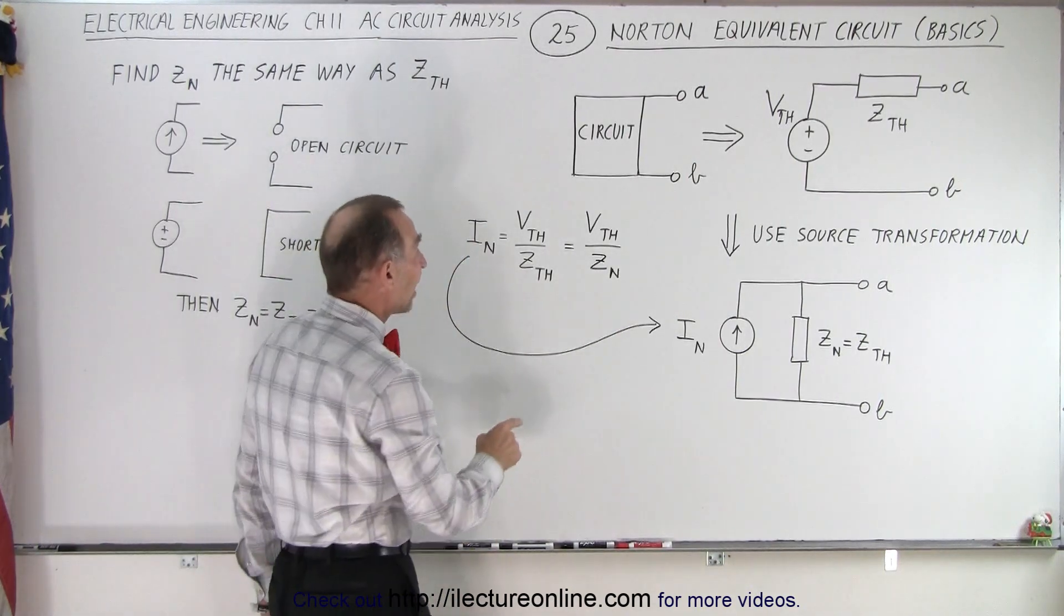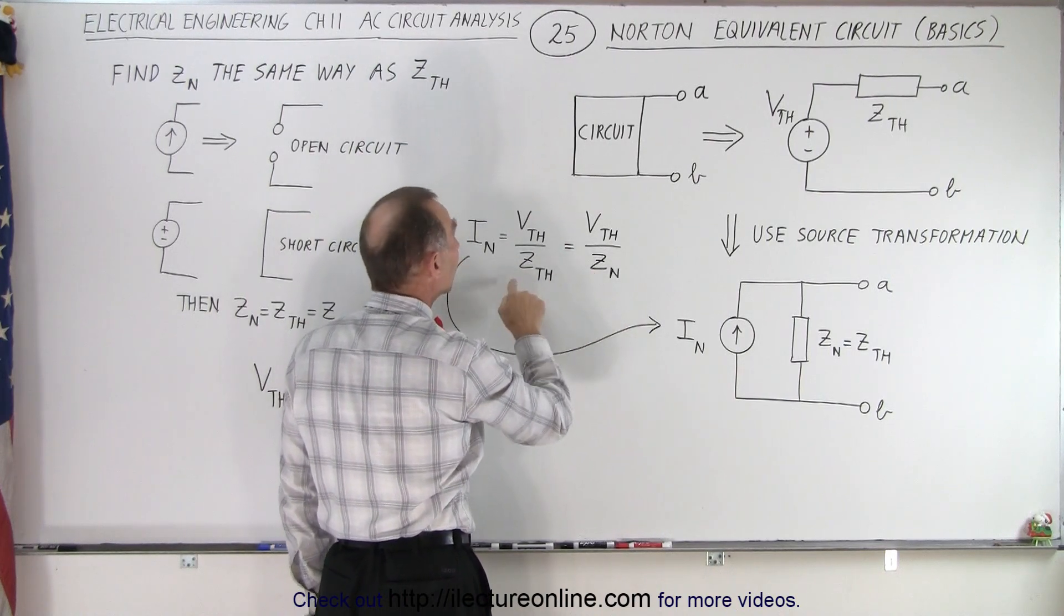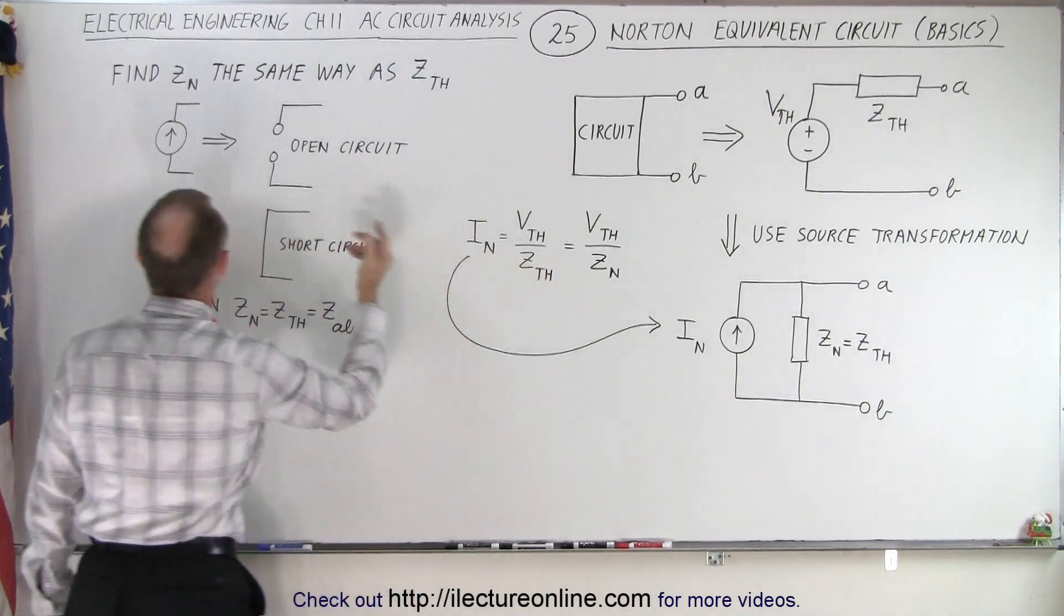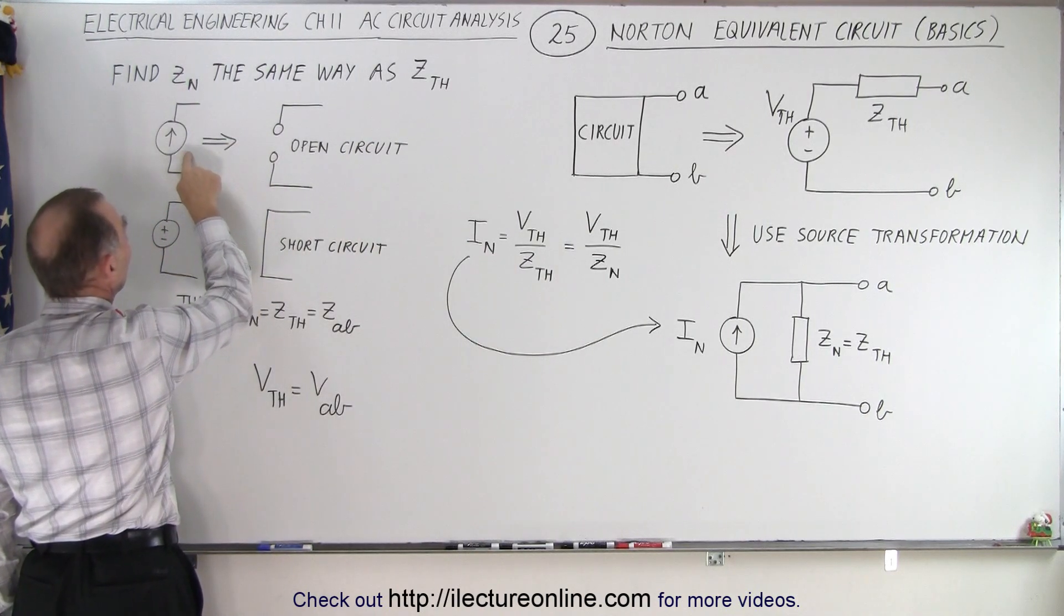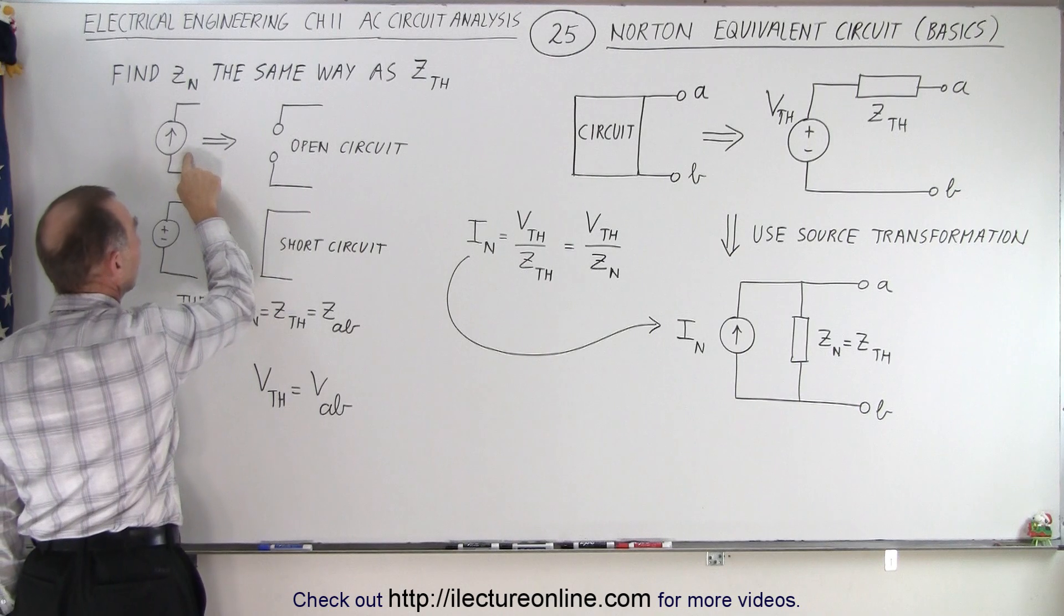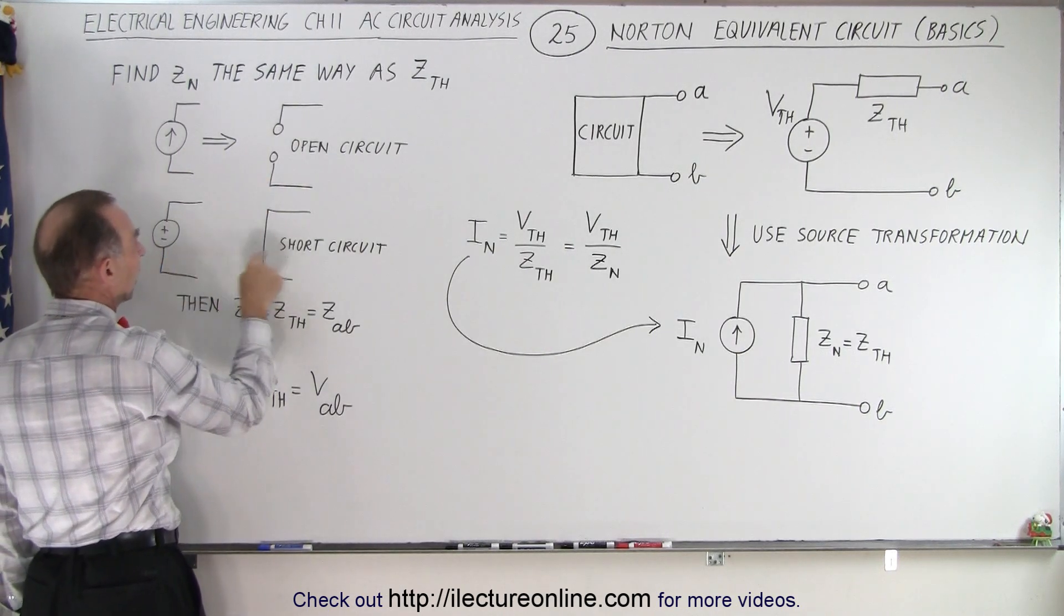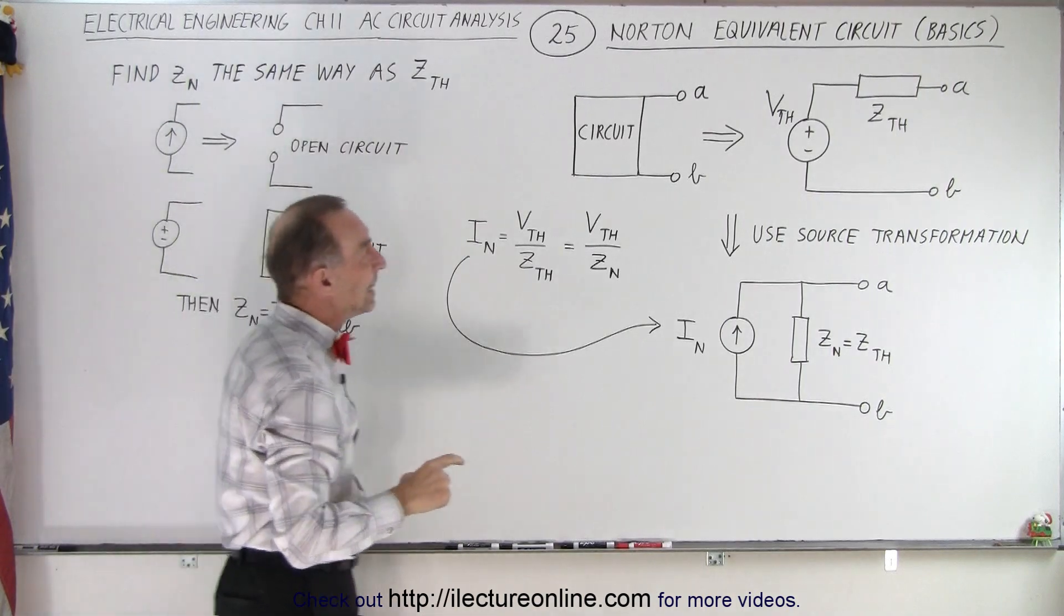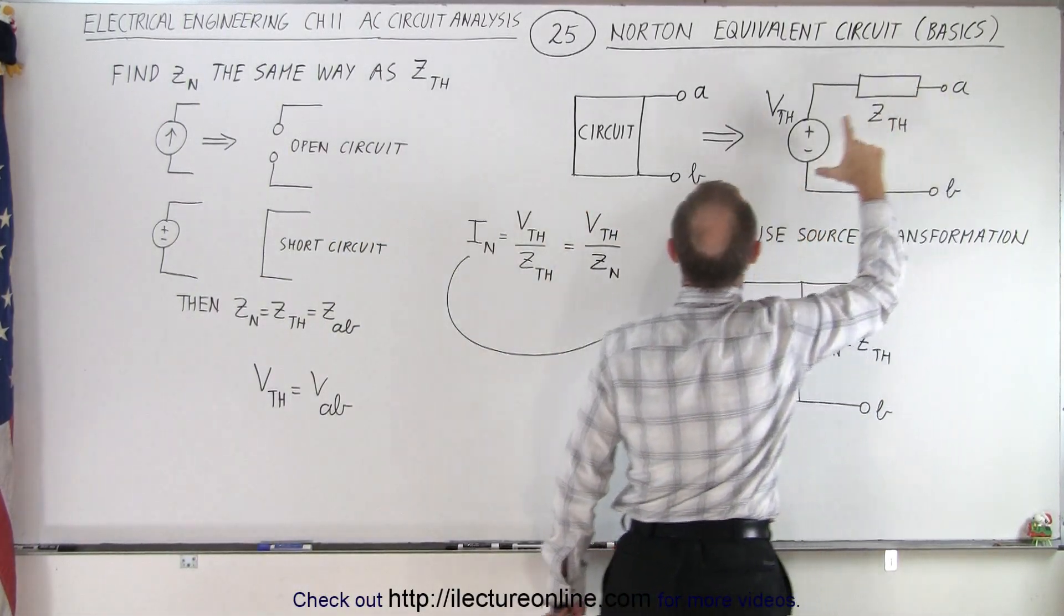And again, how do you find the Thevenin impedance, which essentially is the Norton impedance? Well, the same as before. You take every current source in the circuit and turn it into an open circuit, and every voltage source in the circuit and turn it into a short circuit, and then you measure the impedance across the remainder of the circuit.